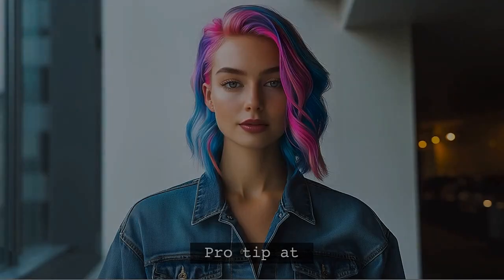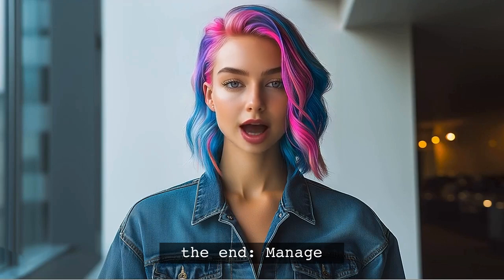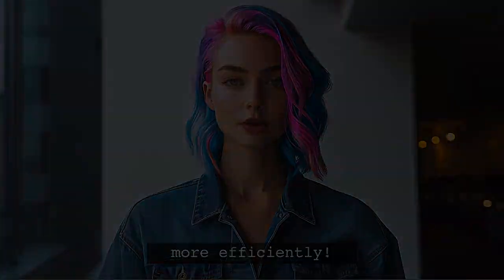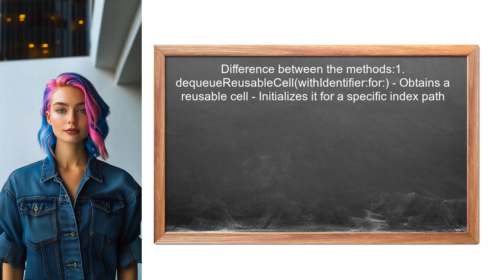Stick around — at the end of this video, I'll share a pro tip that will help you manage your table views more efficiently. To clarify the difference between the two methods, let's start with DQ Reusable Cell with Identifier for. This method is used when you need to obtain a reusable cell and ensure that it is properly initialized for a specific index path.